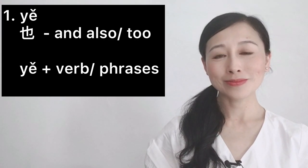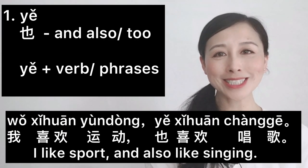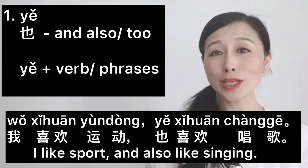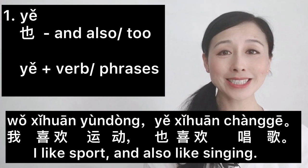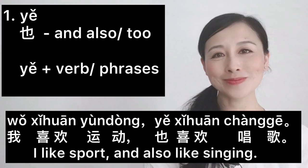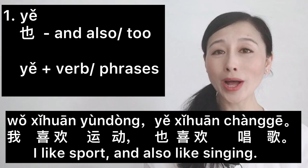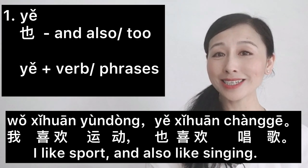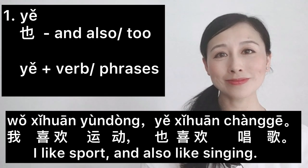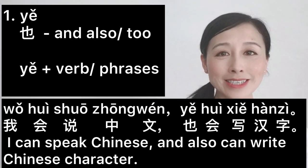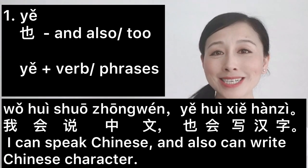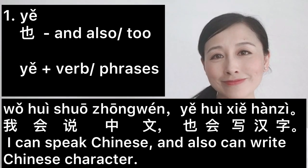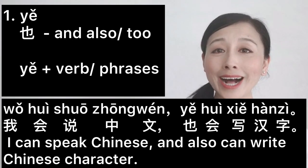也 is used to connect verb phrases. It's often used to link two phrases that share the same subject. For example: 'I like sport, and I also like singing.' 我喜欢运动，也喜欢唱歌。 Another example: 'I can speak Chinese and also can write Chinese characters.' 我会说中文，也会写汉字。